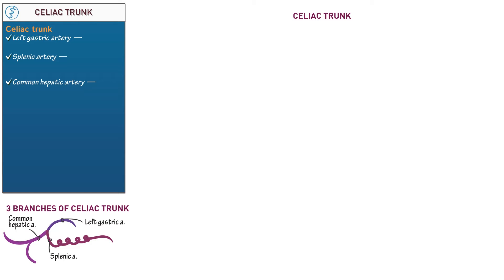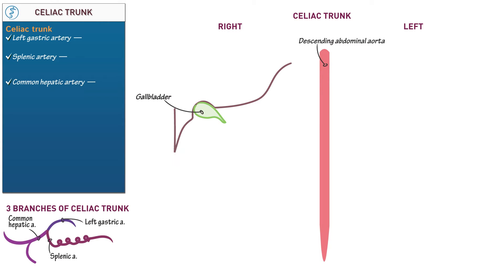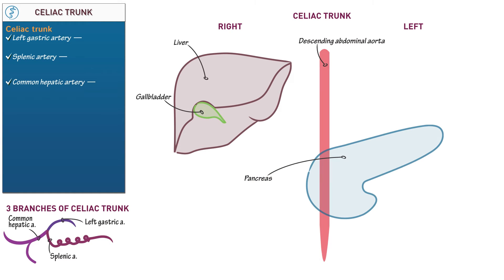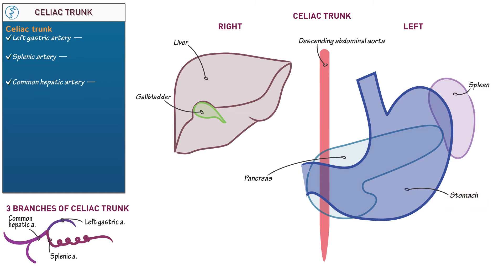Let's begin with a few contextual details. First, define the right and left sides of our diagram, then draw the descending abdominal aorta — the section of the aorta inferior to the diaphragm. On the right side of the diagram, draw the gallbladder, which stores bile, and surrounding it a section of liver. Then show that the pancreas, which secretes pancreatic juice into the gastrointestinal tract, lies partially over the aorta and points to the left. Show the spleen, which is an organ of the lymphatic system, and anterior to the pancreas, the stomach. Show that the stomach is continuous with the first portion of the small intestine, the duodenum.